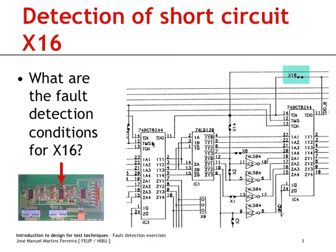This means that during the first eight clock cycles, the logic values present in these two TDO pins will be exactly the same because we are shifting out the same pattern from the two devices. As such, the X16 fault will not be detected in the first eight clock cycles. It may be detected afterwards if we shift in something that causes the fault detection conditions to take place.